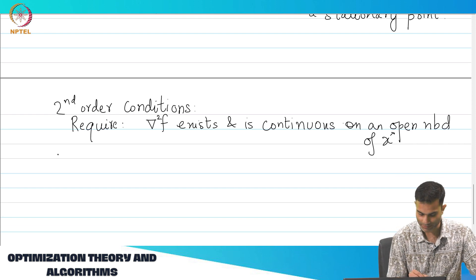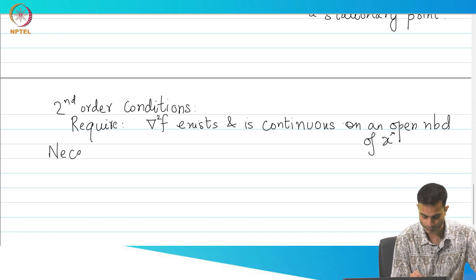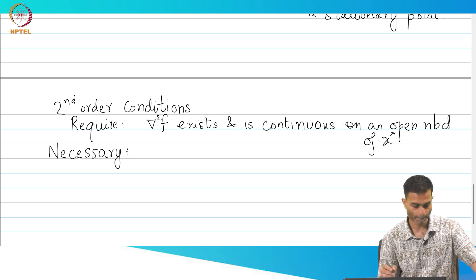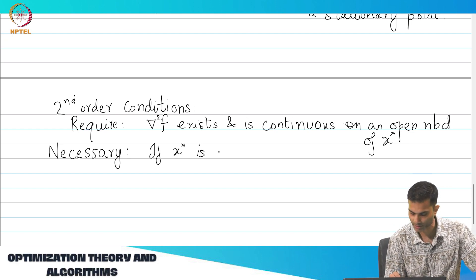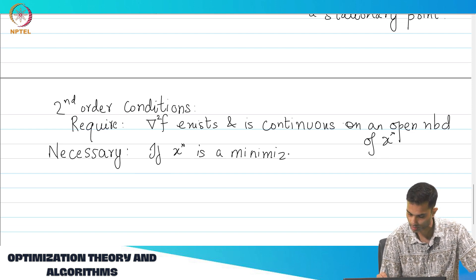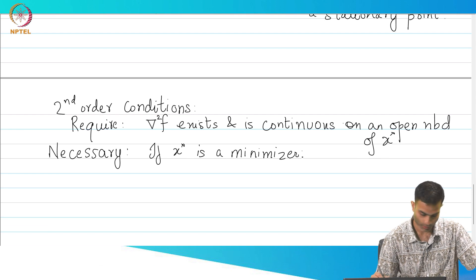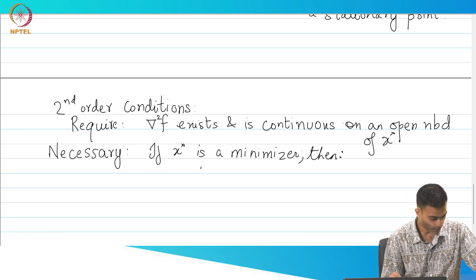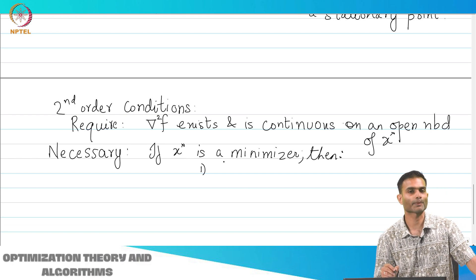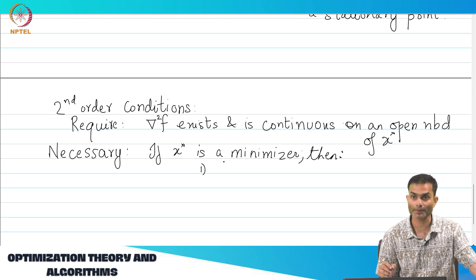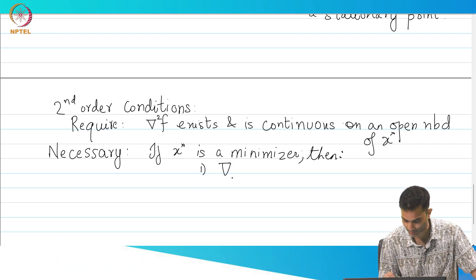So, we will start with the necessary part. So, it states that if x* is a minimizer, then what all happens? First is what we expected from the first order condition, grad f(x*) should be 0, right, no surprises here.